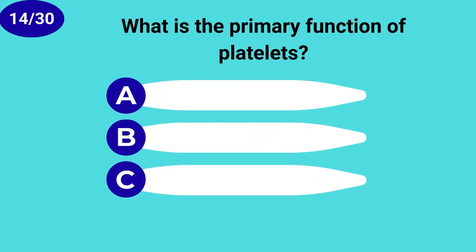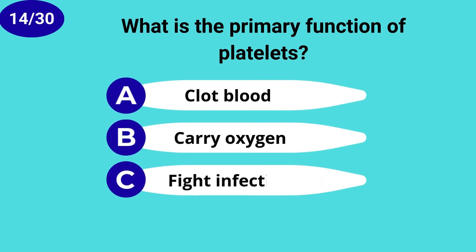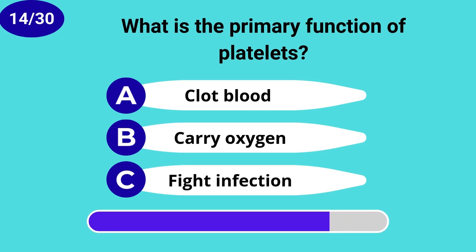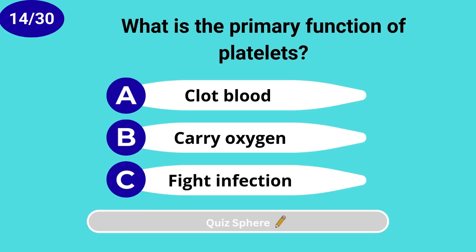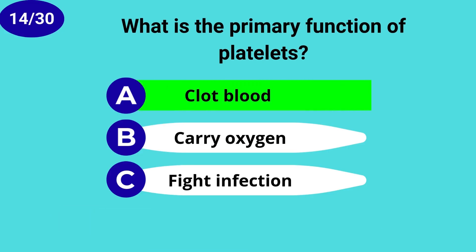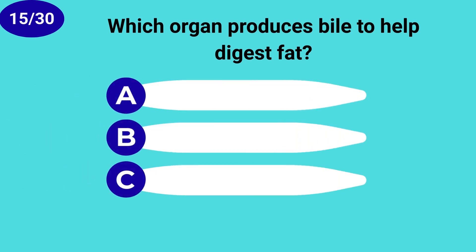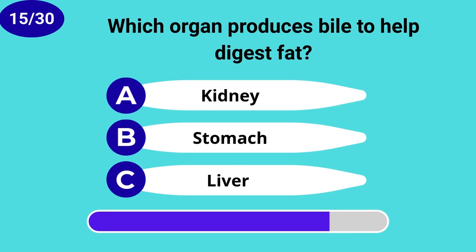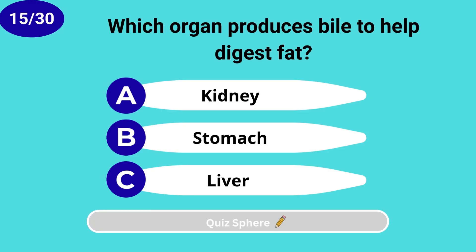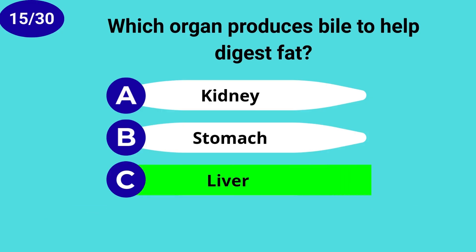What is the primary function of platelets? Clot blood. Which organ produces bile to help digest fat? Liver.